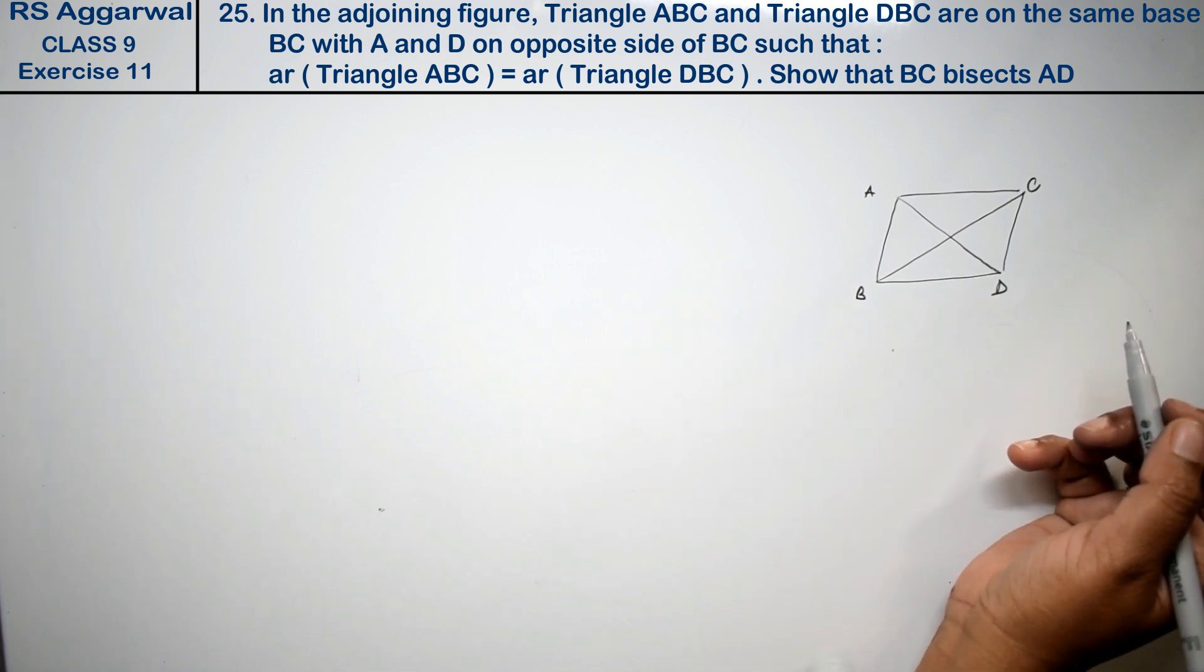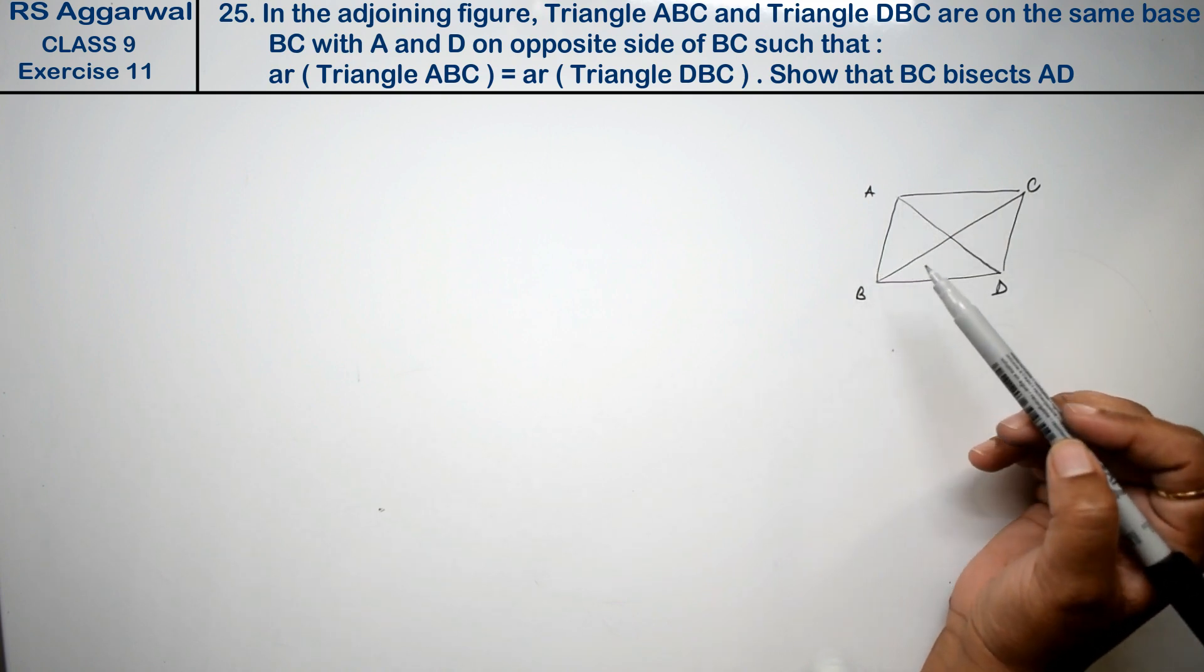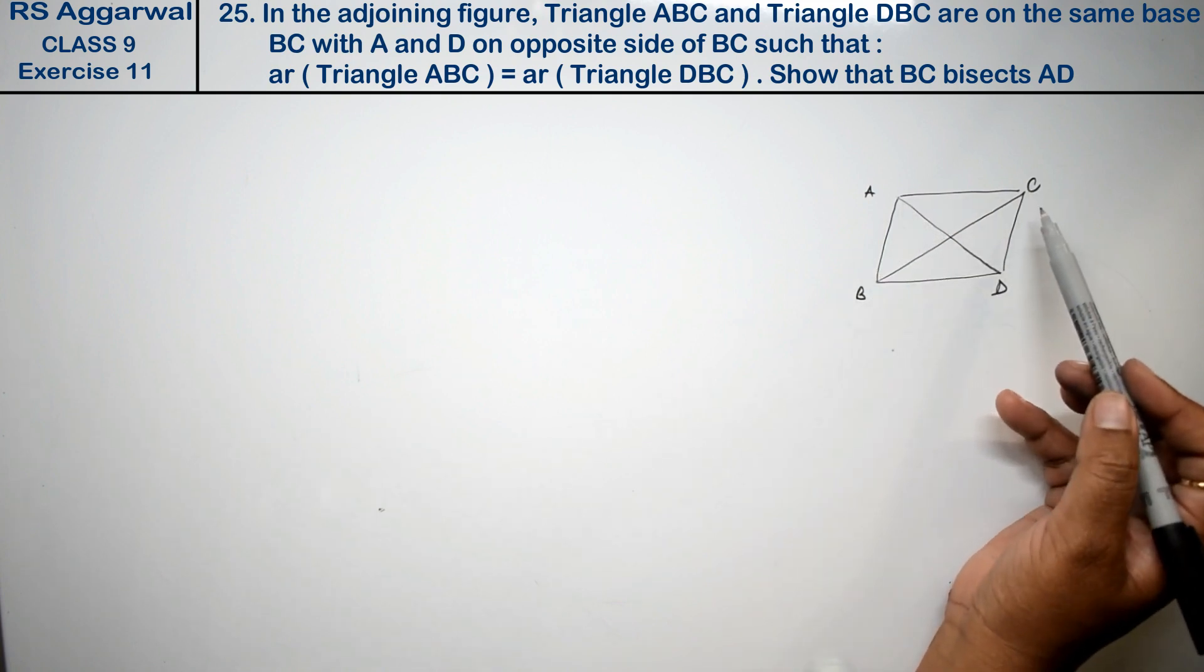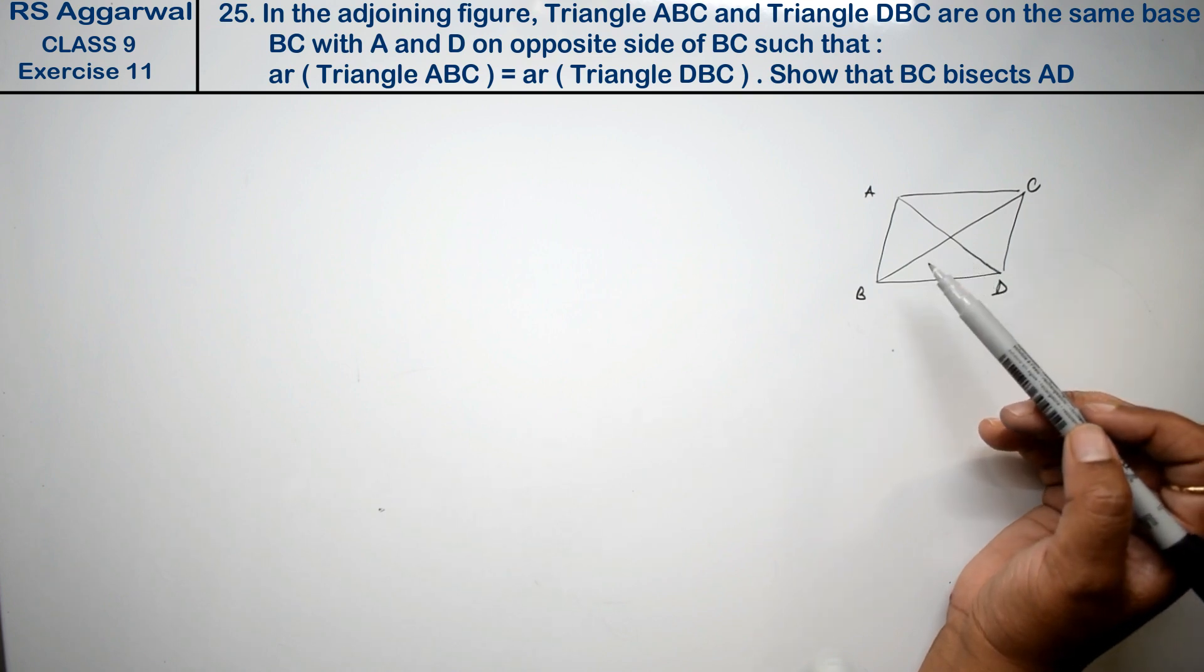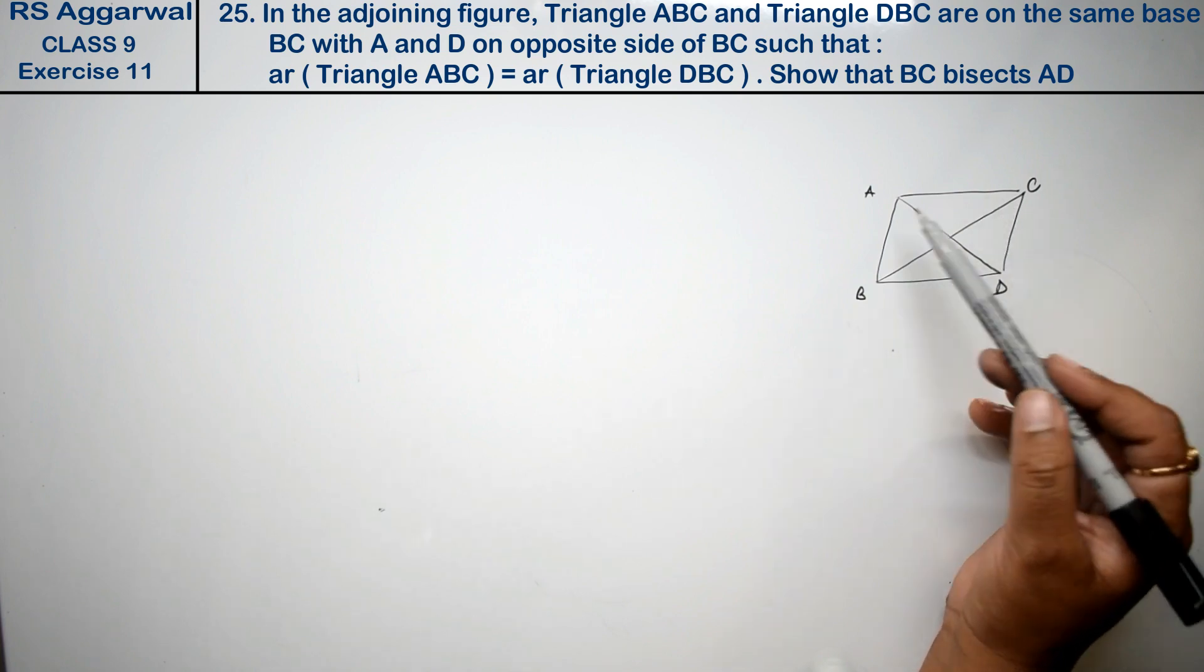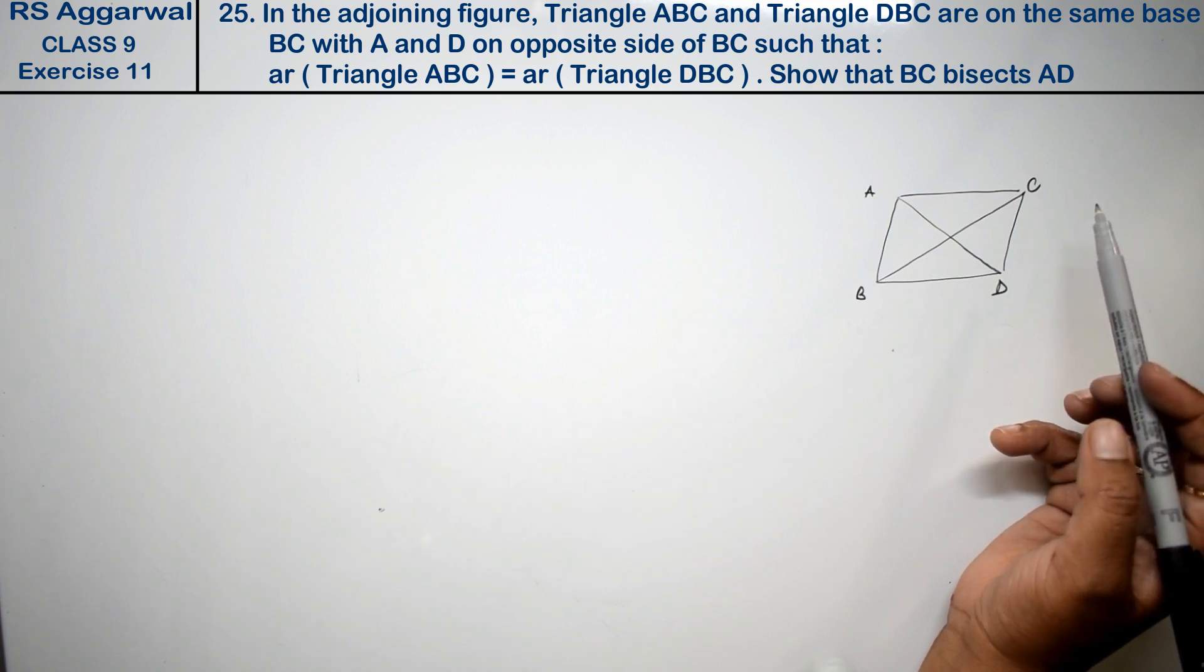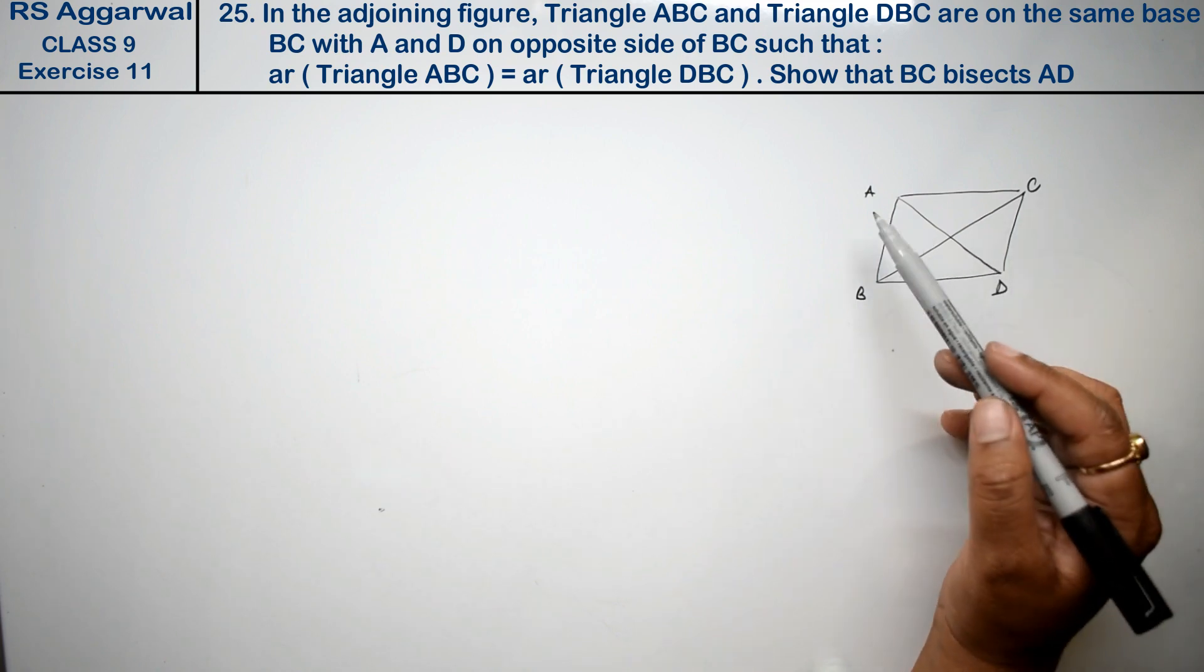Now what are you saying? Triangle ABC and DBC are on the same base BC with A and D on the opposite side of BC such that area of triangle ABC equals DBC. Show that BC bisects AD.